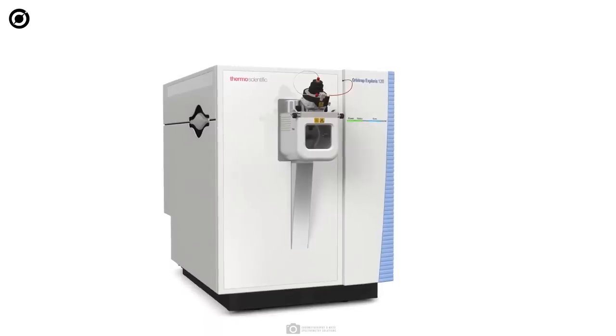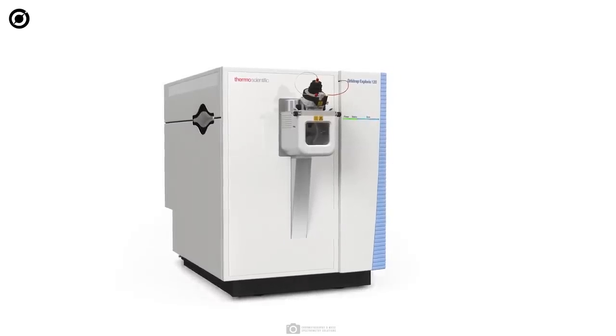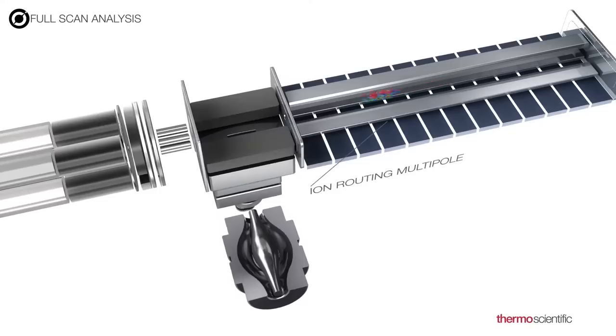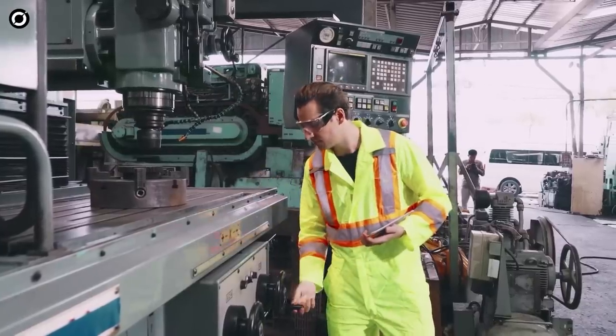Laser desorption mass spectrometry, or LDSM. With this we can remove morsels of materials from a sample, and then there is an analyzer called Orbitrap which determines the chemistry of the mystery material.